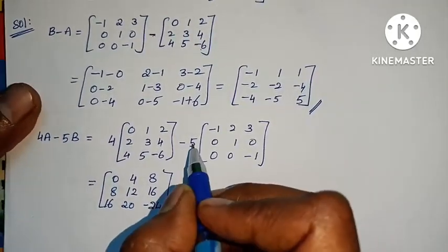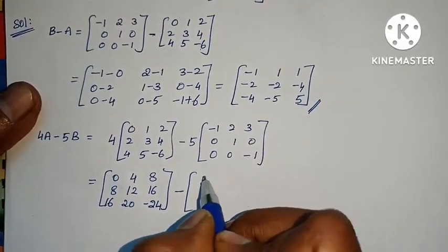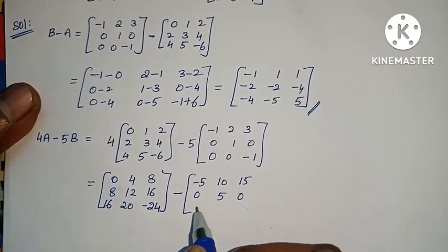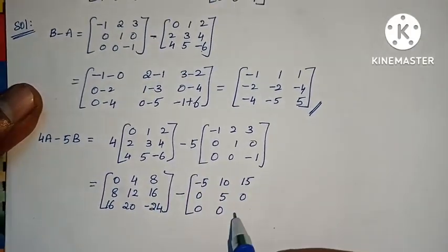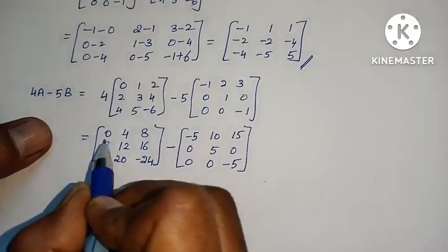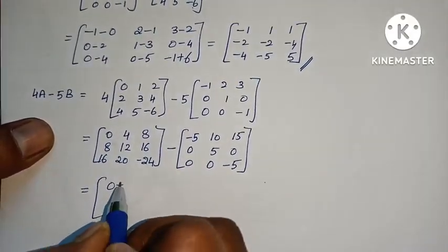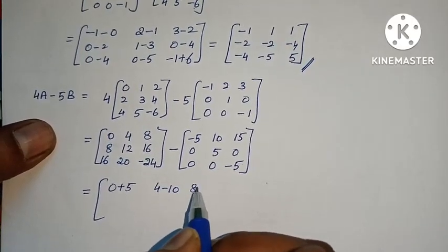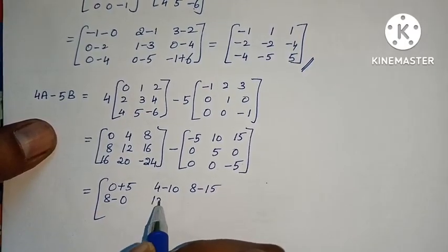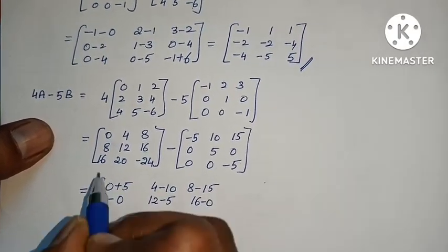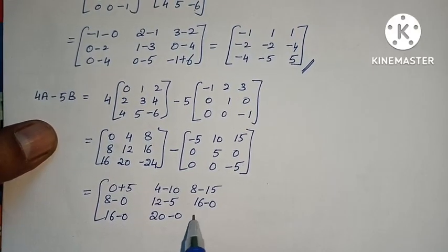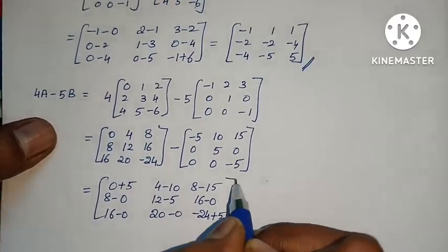Now multiply by minus 5: 5 into 1 is 5, minus 5; 5 into 2 is 10; 5 into 3 is 15; 0, 5 into 1 is 5; 0, 0, 0; 5 into 1 is 5. Now subtract: 4 minus 10, 8 minus 15, 8 minus 0, 12 minus 5, 16 minus 0, 16 minus 0, 20 minus 0, minus 24 minus (minus 5) gives plus 5.